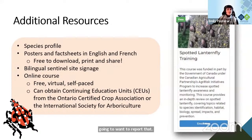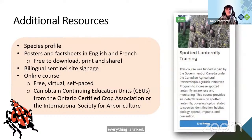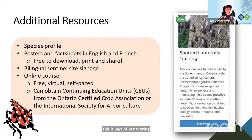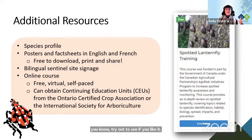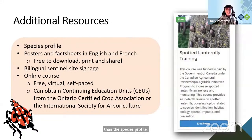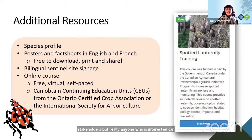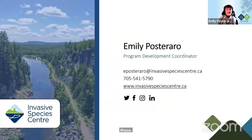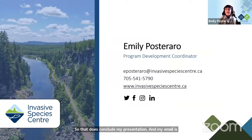For additional resources, go to our SLF species profile online where everything is linked conveniently. I do want to highlight our online Spotted Lanternfly training course, which is free of cost. As with all our courses, it's virtual and self-paced and goes into more detail than the species profile. It's really open to anyone. You can receive continuing education units from the Ontario Certified Crop Association or the International Society for Arboriculture if you're involved with either of those. That concludes my presentation — happy to take questions now or by email.